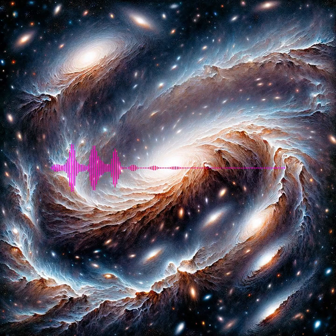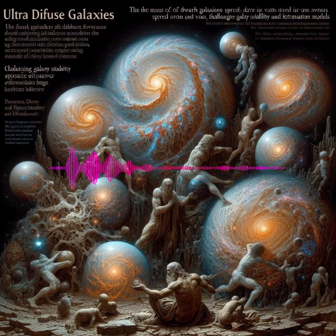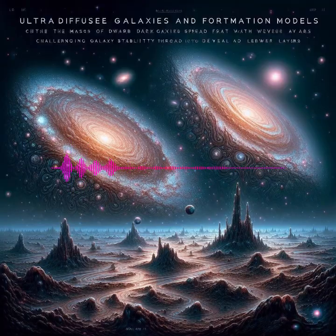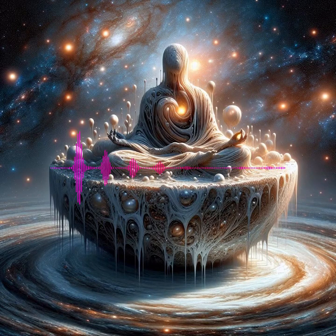Ultra-diffuse Galaxies. UDGs have the mass of dwarf galaxies but are spread across vast areas. They are so faint and diffuse that they challenge existing models of galaxy stability and formation. Their study may revolutionize our understanding of how dark matter influences galaxy structure and how environmental factors affect galaxy morphology.